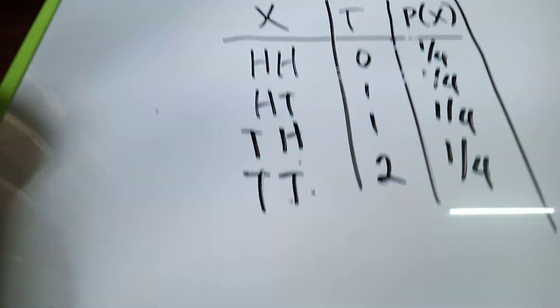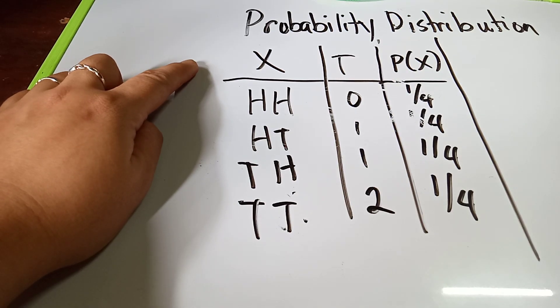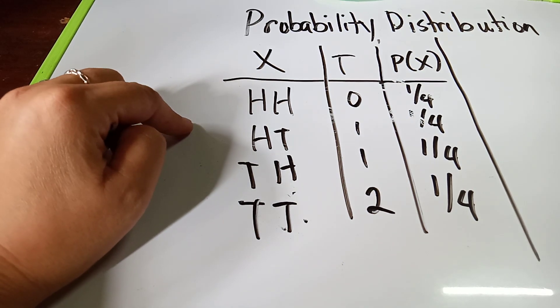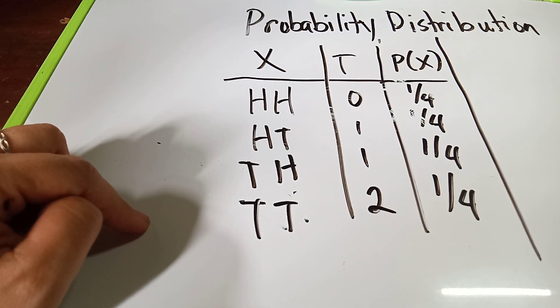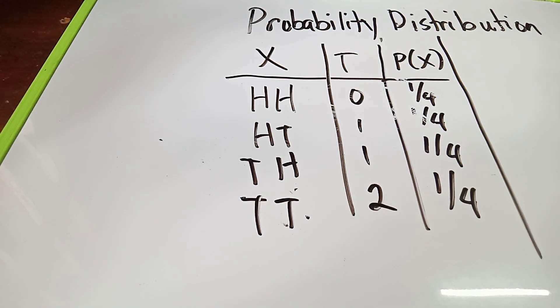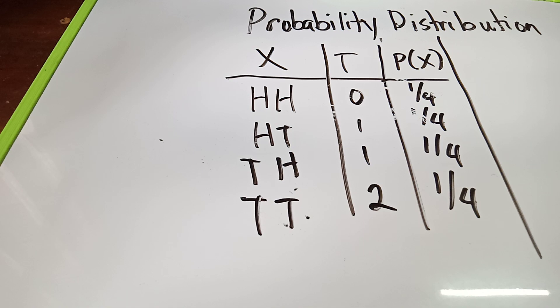While if we want to get the probability distribution, if this is the probability, it is mostly used by the head. So probability, for example, flipping a coin, we will get the outcome of the head and head, head and tail, tail and head, or tail-tail. So if we will find out the number of tails, we have no tails here because there are two heads, one tail, and then one tail, and then two tails. So we will get the probability of X. So if we want to do this continuously, we will look for the mean or the expected value, the variance, and the standard deviation.